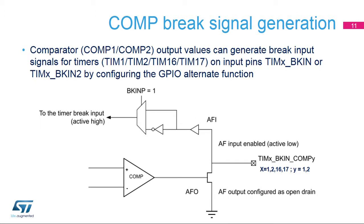Comparator output values can generate brake input signals for the timers on input pins using GPIO alternate function selections, incorporating the I/O open-drain connection. The purpose of the brake function is to protect power switches driven by PWM signals generated by timers. The two brake inputs are usually connected to fault outputs of power stages and three-phase inverters. When activated, the brake circuitry shuts down the PWM outputs and forces them to a predefined safe state.